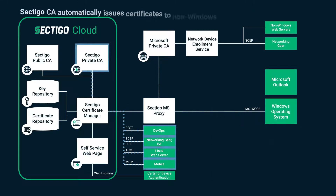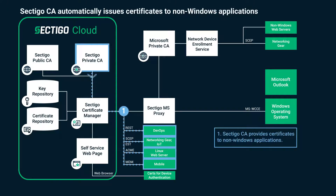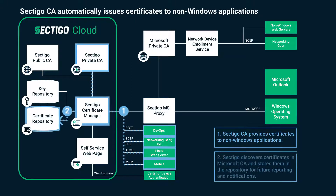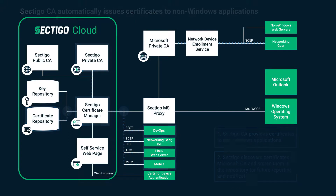When a non-Windows application requests a certificate, Microsoft can delegate the issuance to a Sectigo-issuing CA in a fully automated manner. Again, Certificate Manager will be aware of the certificate, allowing for reporting, compliance checking, and expiry notification.